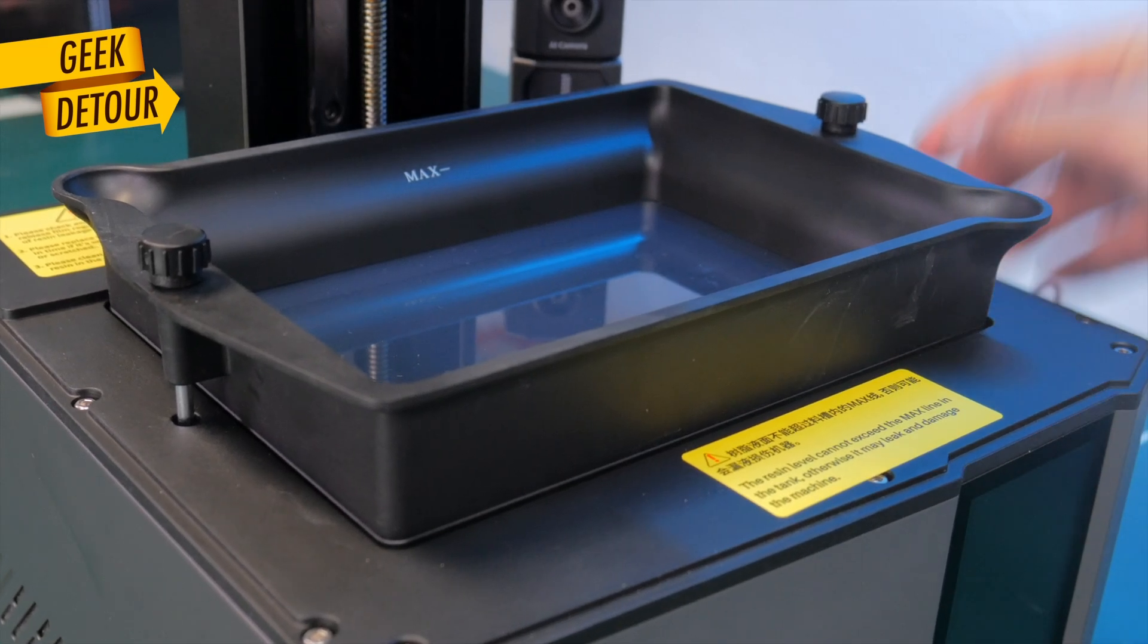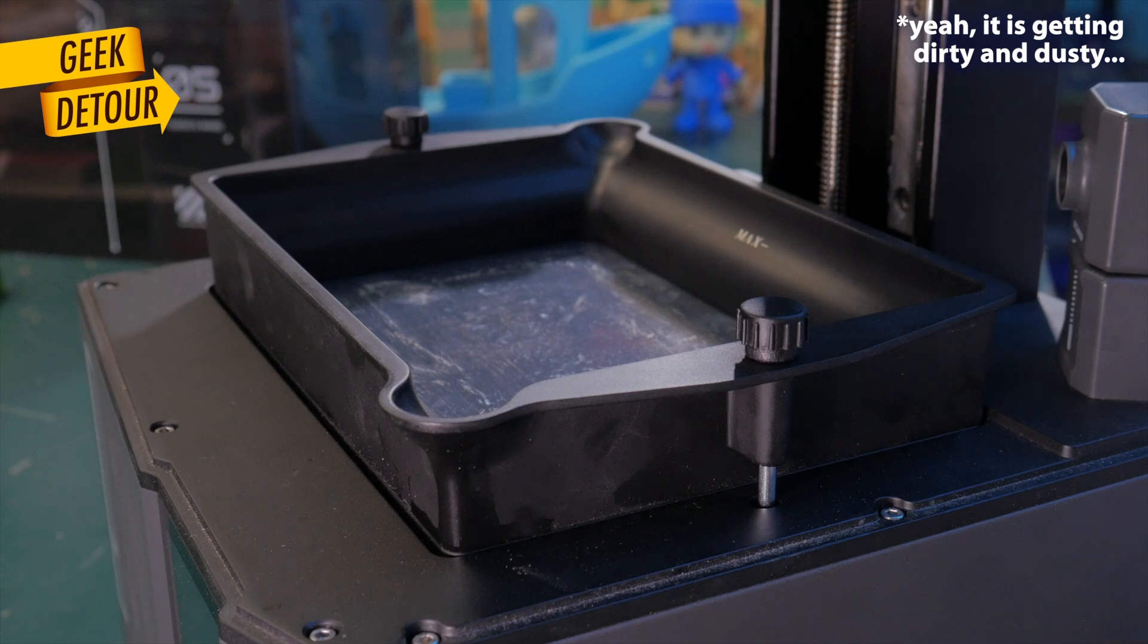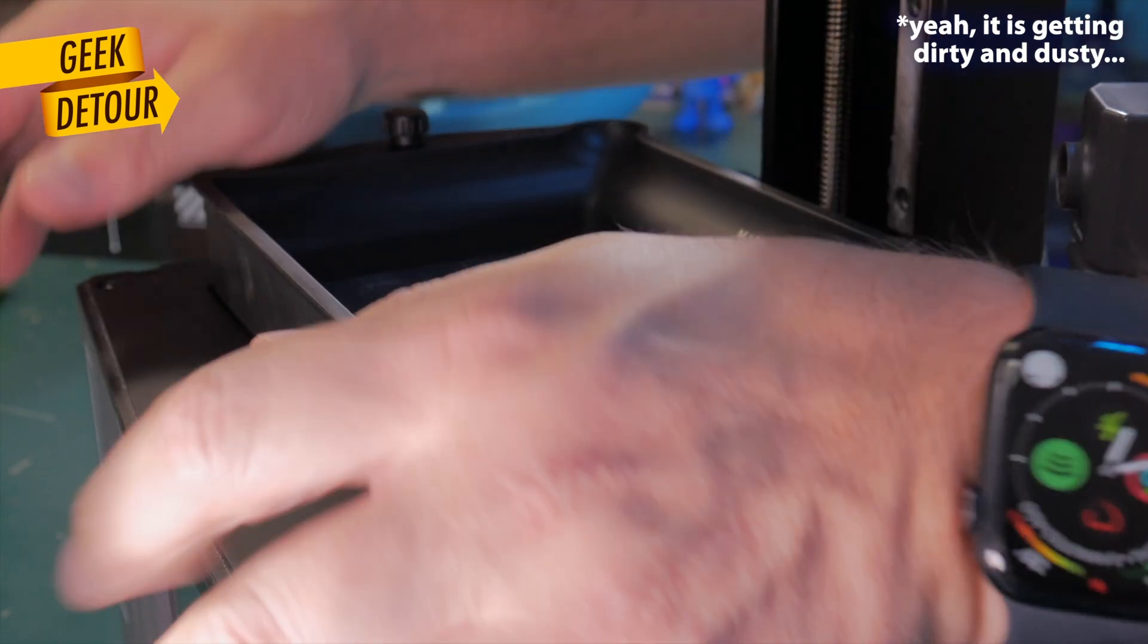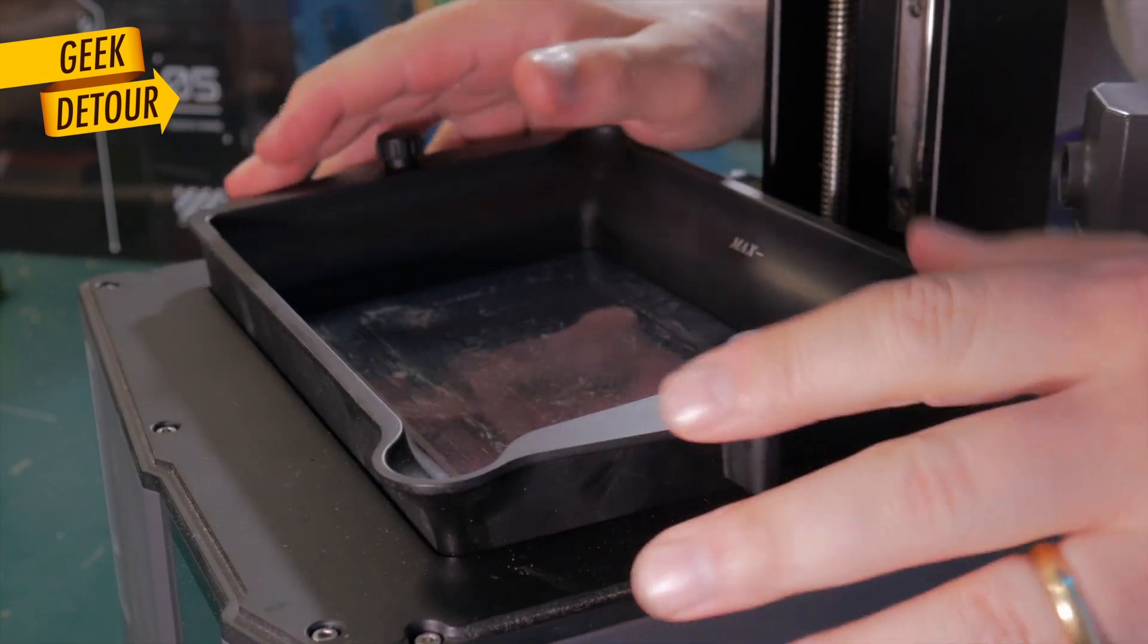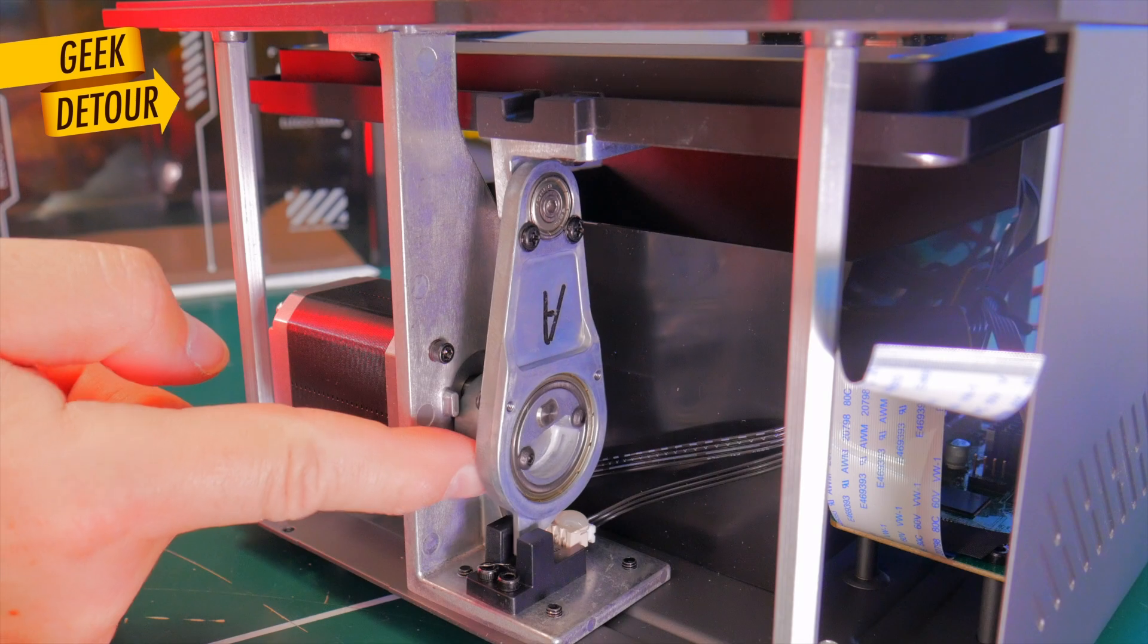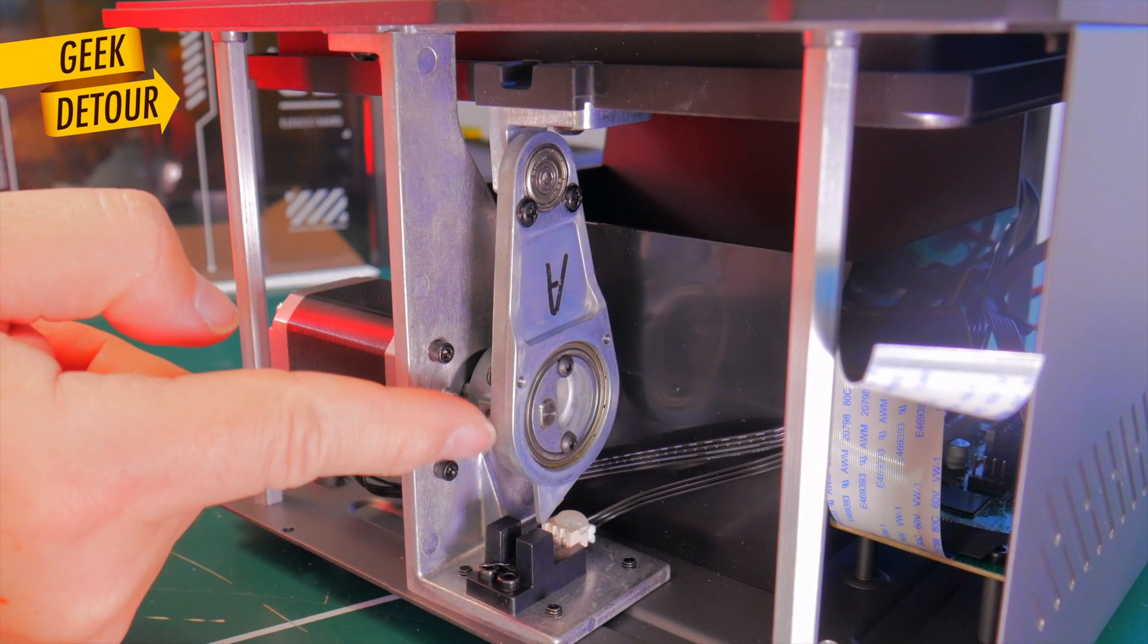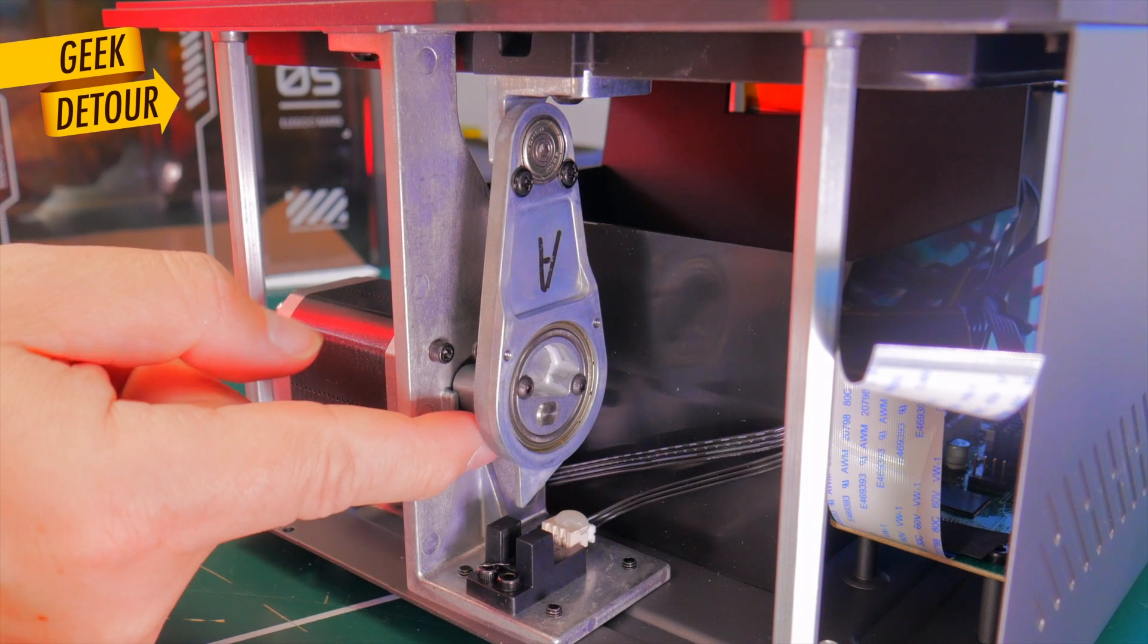When the printer is turned off, you can push the vat down or up so easily. But when it's turned on, it is impressively strong. It just stays. It is easy to see why. When the vat moves up, this mechanism actually pushes the platform completely against the frame of the printer. It clamps them up.